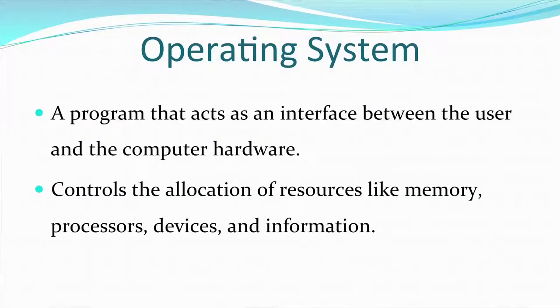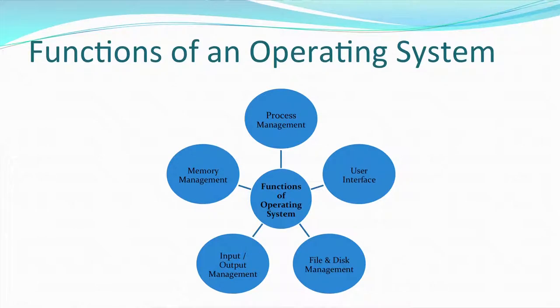First of all, what is an operating system? An operating system is a software which forms an interface between the user and the computer. It mediates between you when you work on the computer and the hardware of the computer. It controls the allocation of resources and memory management. Any command that you give to the computer is first accessed by the operating system, and then the respective functioning takes place — whether output is to be given, memory allocated, or instructions sent to a peripheral device.